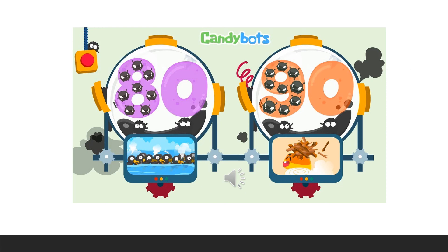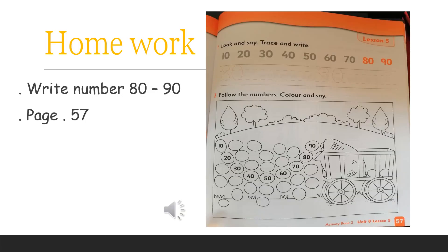Okay, now I want you to write number 80 and 90 on your notebook and do your page 57. You have to write numbers from 10 to 90. Trace the numbers. After that, write number 80 and 90. Then color the numbers. I'm waiting for your answers. Goodbye!